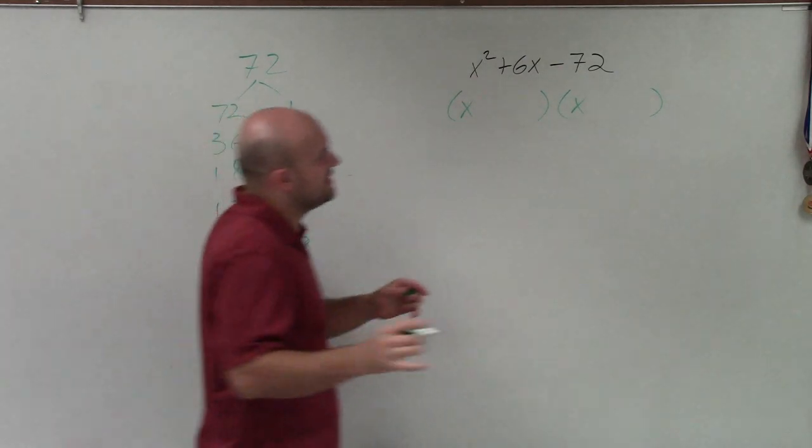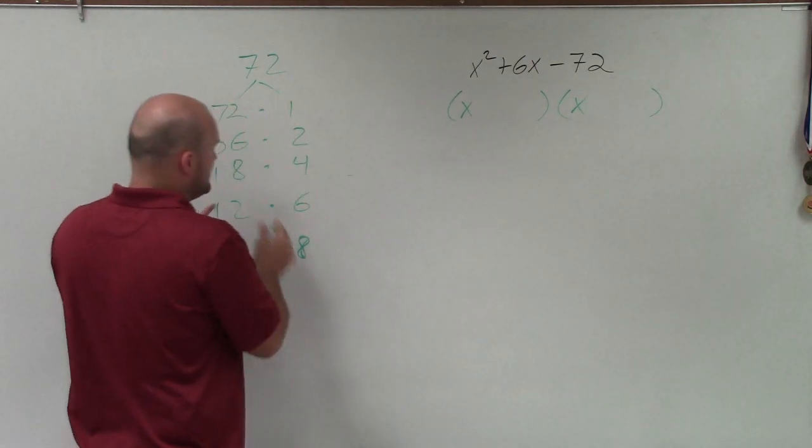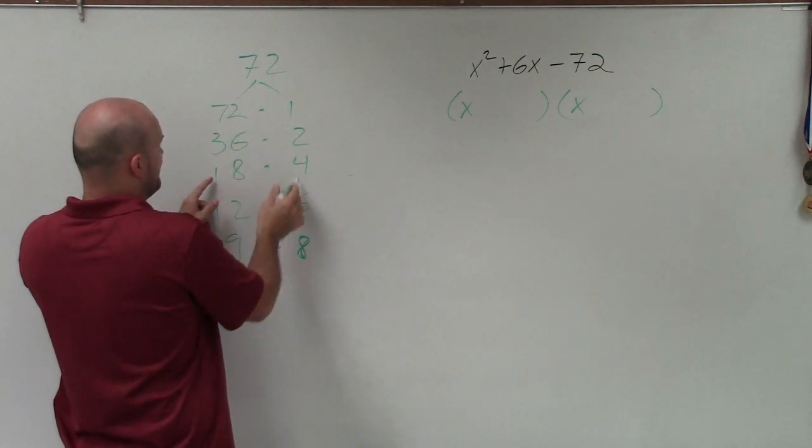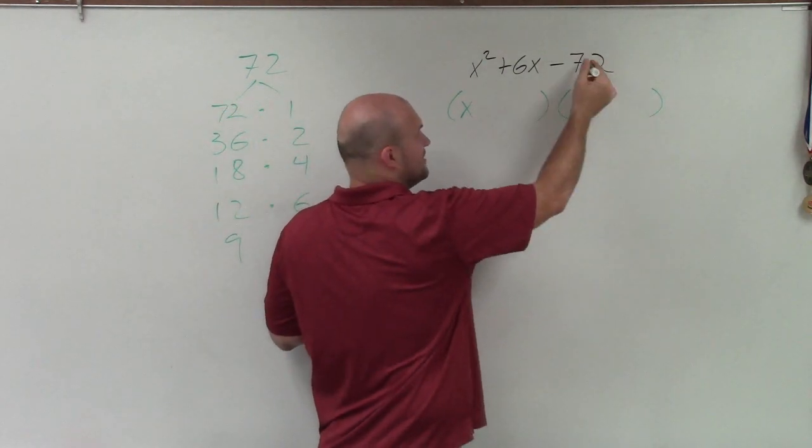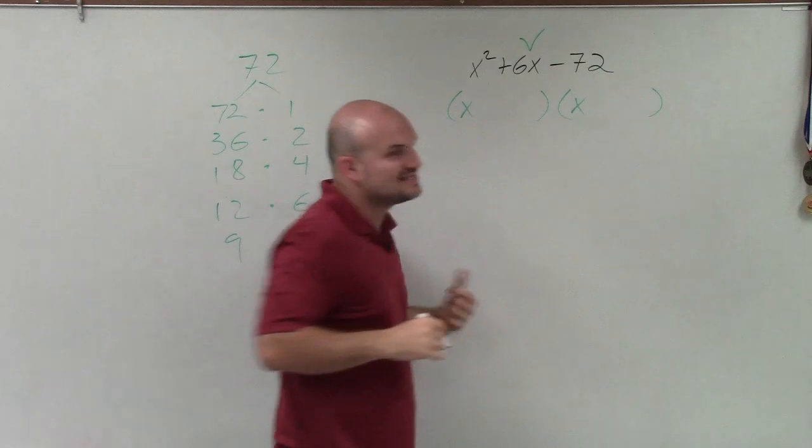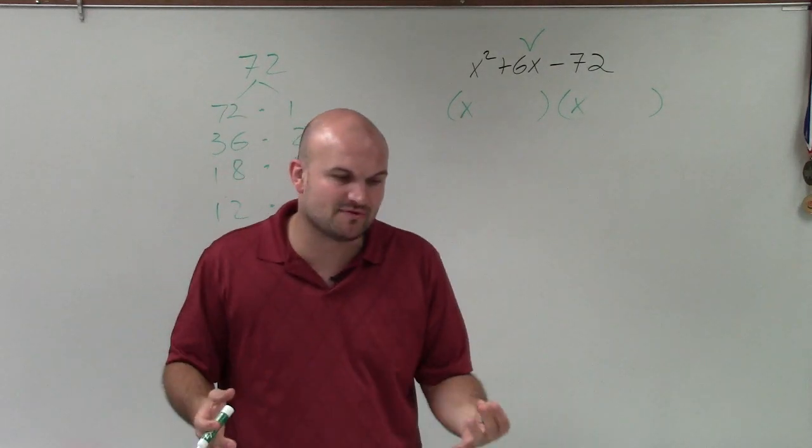But the important thing is, before I just start randomly choosing which numbers, is it going to be 18 and 4 or 12 and 6? I need to say, well, if I can find two numbers that will multiply to give me negative 72, that's fine. But where does that 6x come from? And the 6x comes from,